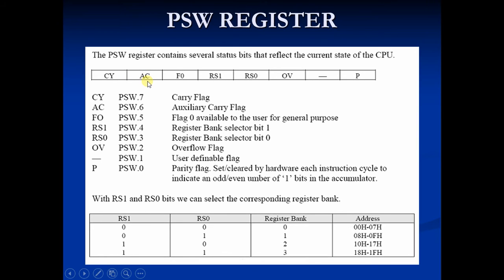The next is AC. AC stands for auxiliary carry flag. If during addition and subtraction any carry or borrow is generated from the lower 4 bits to the higher 4 bits, then AC sets; else it resets. It is used in BCD arithmetic operations.